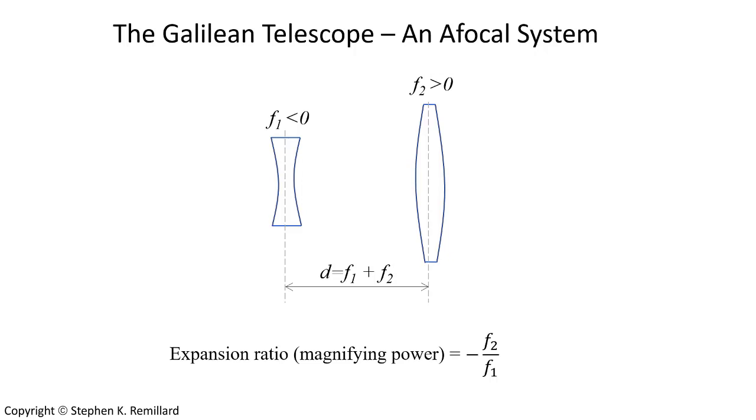The separation is the sum of the focal lengths. Once one of these f's is negative, and one is positive, the minus sign is included in this variable. The expansion ratio is the magnifying power of the system. It is how much bigger the beam gets, and it equals minus the ratio of the focal lengths of the two lenses.